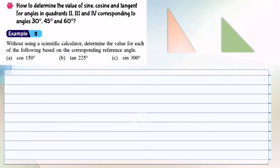Now we are going to learn how to determine the value of sine, cosine and tangent for angles in quadrants 2, 3 and 4 corresponding to angles 30 degrees, 45 degrees and 60 degrees. Example 5: without using a scientific calculator, determine the value for each of the following based on the corresponding reference angle.